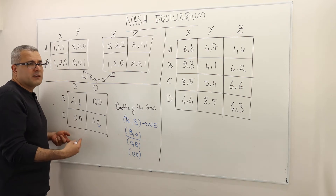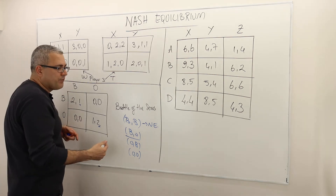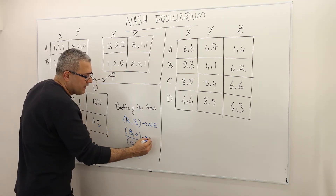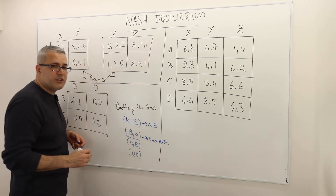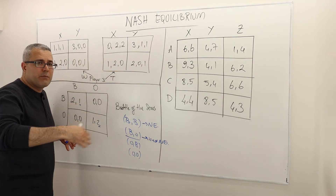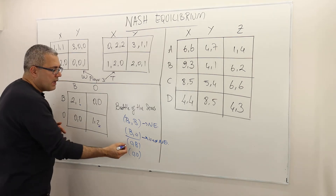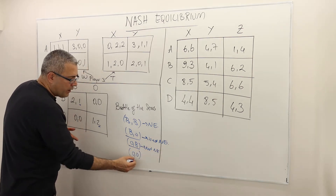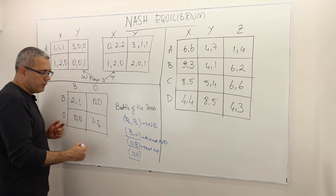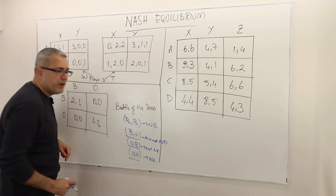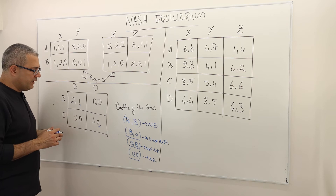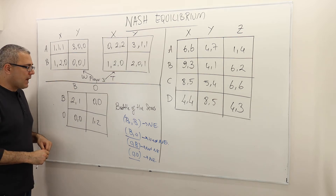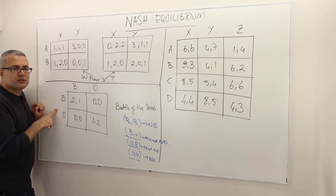You don't really have to check player two — as long as one player is not best responding, the strategy profile is not a Nash equilibrium, because Nash equilibrium requires every player to best respond to their opponent. With symmetric arguments, OB is also not a Nash equilibrium. And OO — which ends up with payoff outcome one and two — is a Nash equilibrium. So this is how we do it. Alternatively, what we can do is find best responses directly on the matrix.